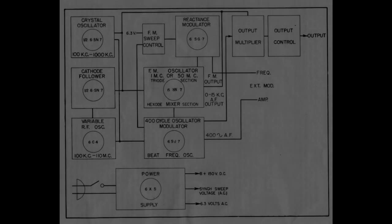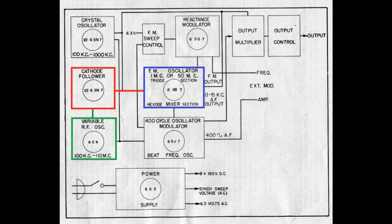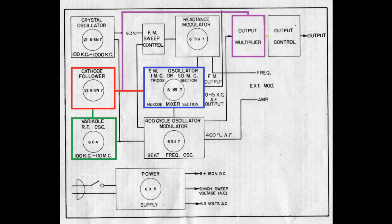Looking at the block diagram, you can see how the signal from the variable oscillator goes into the cathode follower and then from the cathode follower it goes into the FM oscillator where it's reused in the modulation section. At the same time, the output of the cathode follower also goes into the output modifier where it can be selected as output via the output control.